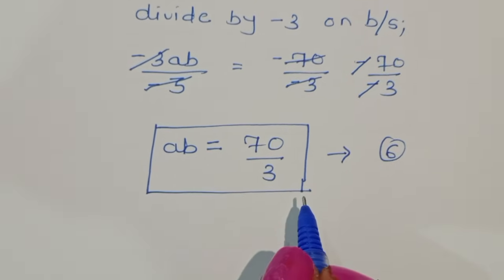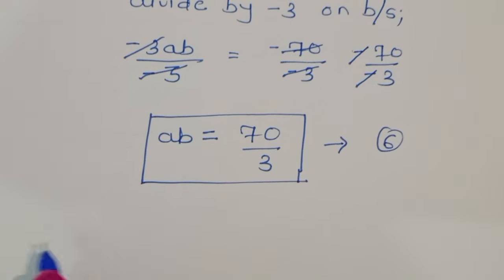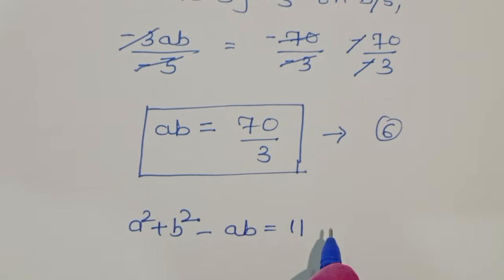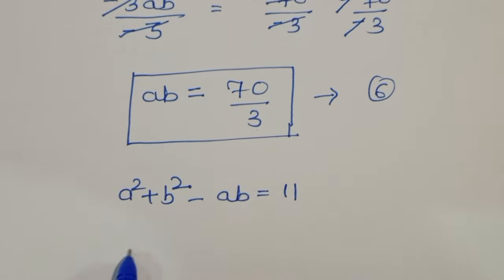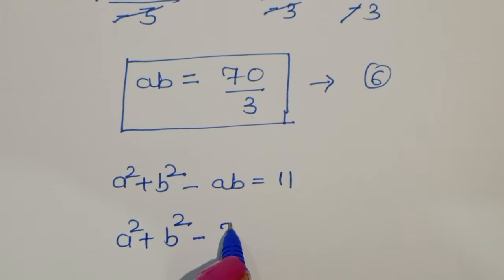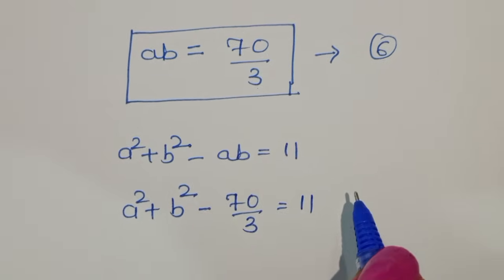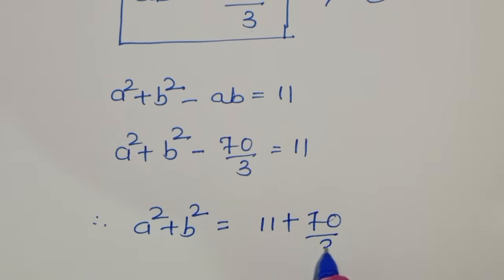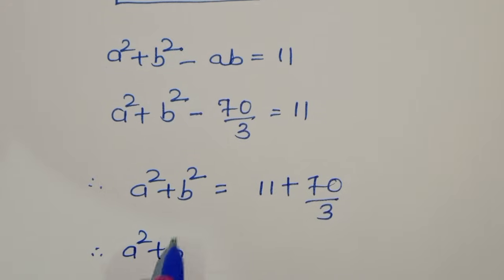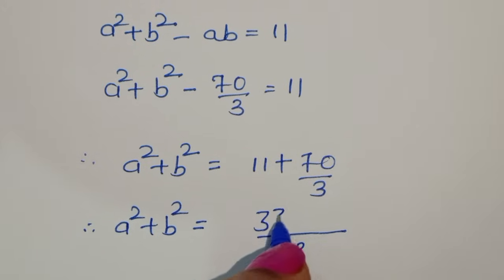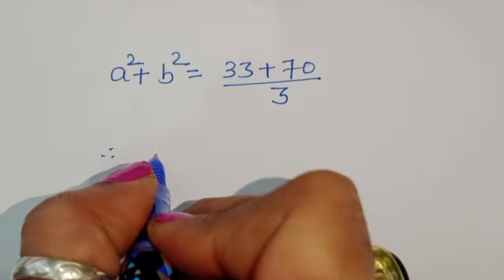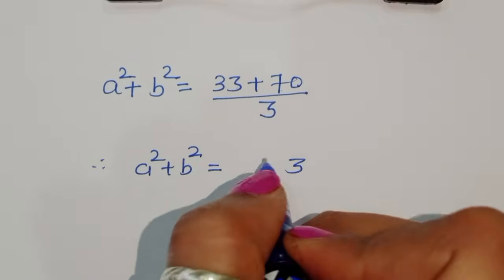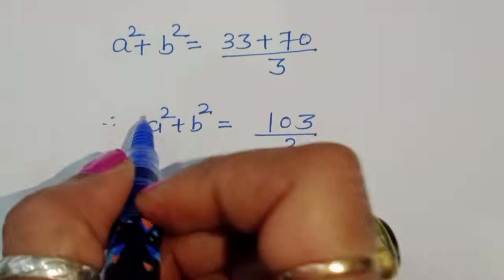From equation 5, a square plus b square minus ab equals 11. We substitute the value of ab, which is 70 by 3. So a square plus b square minus 70 by 3 equals 11. Therefore, a square plus b square equals 11 plus 70 by 3. Taking the LCM, that is 33 plus 70 over 3, which equals 103 divided by 3. This is equation number 7.